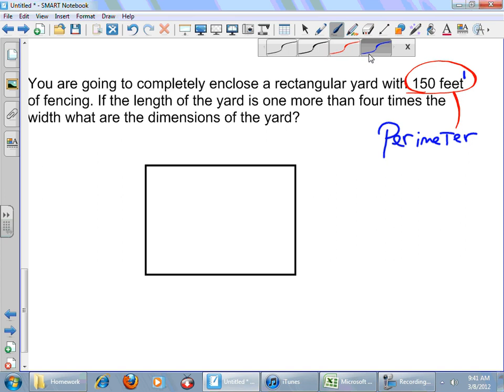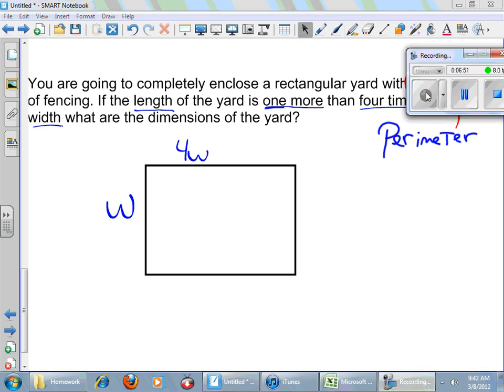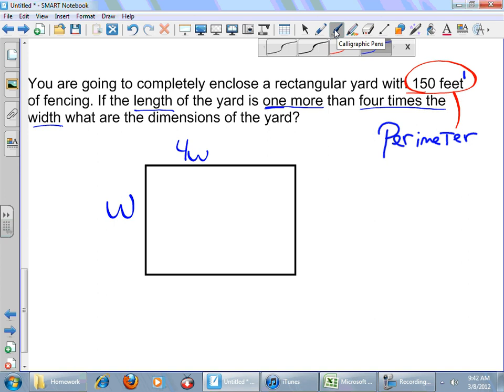So we know that the length is one more than four times the width. Well, what do you want to call the width? All right. We'll call the width w. Now, we need the length to be one more than four times the width. Well, four times the width is 4w. And sorry about that. I confused myself for a second. So 4w is four times the width. And I need one more.